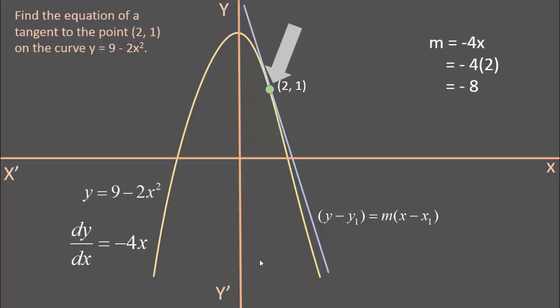This is the slope of the tangent also. You know the point and slope now. So, substituting x₁ = 2, y₁ = 1 and m = -8 in the formula (y - y₁) = m(x - x₁), you get the required equation. It is y = -8x + 17.